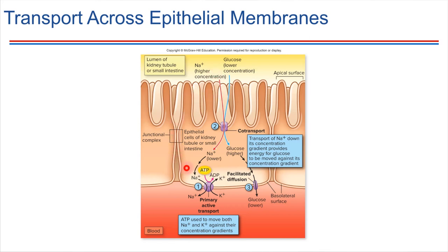Here we have our epithelial cell. Down here is the bloodstream. Over here is the lumen — we're considering the small intestine because it's familiar — and this is where food would be passing through.